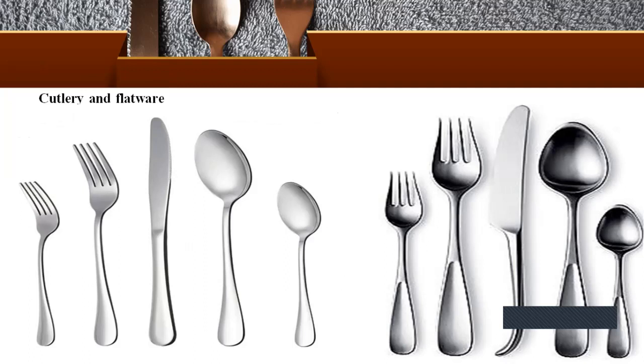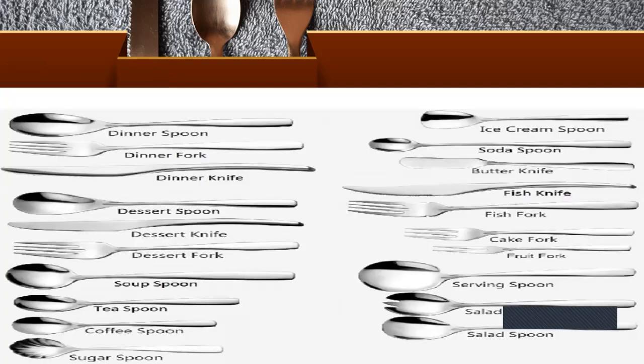Here the different varieties of spoon, fork, and knife you can see: dinner spoon, dinner fork, dinner knife, dessert spoon, fish fork, cake fork, fruit fork, serving spoon, salad fork, teaspoon, coffee spoon, and sugar spoon. The dinner spoon can pick up just the right amount of rice and curry. The dessert spoon is used for dessert courses. The soup spoon has a round cup shape, bigger than other spoons. The ice cream spoon — also called a sundae spoon — is used to serve ice cream. The butter knife is useful for cutting semi-formed pieces of butter and applying them on food such as bread. The service spoon is used to serve rice and curry.